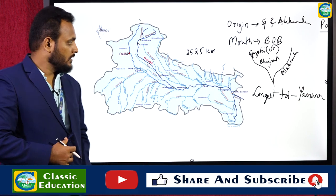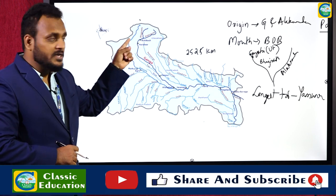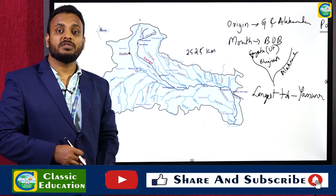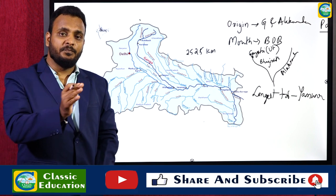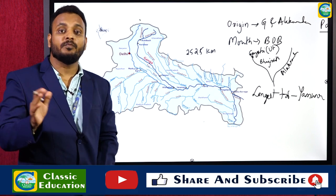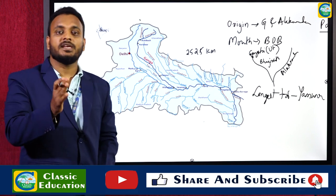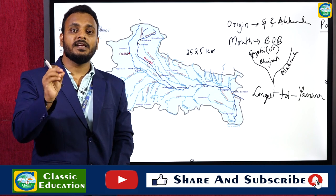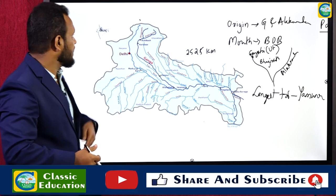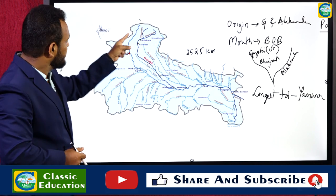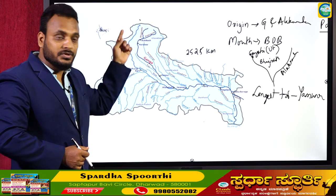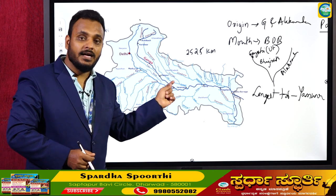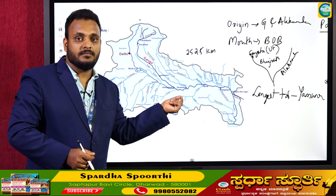Yamuna originates from a glacier called Yamunotri Glacier, which is part of the Bandar Punj hills of the Mussoorie ranges — the Middle Himalayas in Uttarakhand. From there, Yamuna flows through Uttarakhand, then connects with Delhi, then goes towards UP, and joins Ganga at Prayagraj.